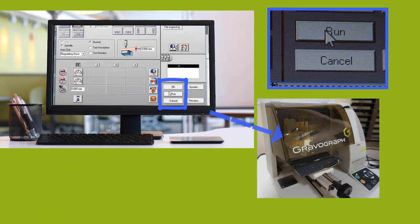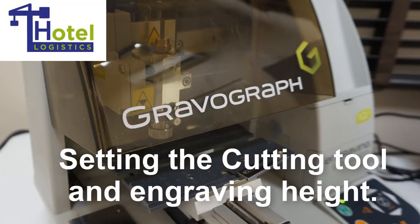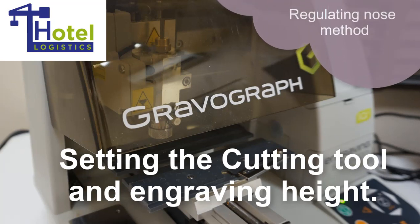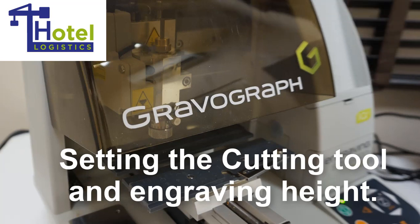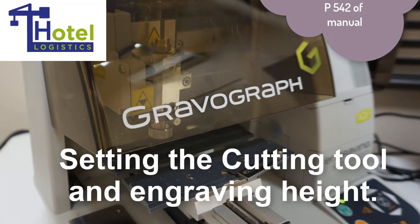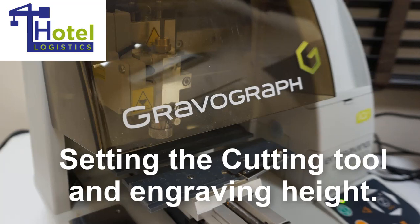With the instructions complete press OK then run to send the instruction to the engraver. You should hear 2 beeps. Now if you press the green button twice the engraving will start. But for the first badge we are going to set the cutting tool and engraving height for the regulating nose method. This is also found on page 542 of the manual on the driver DVD.